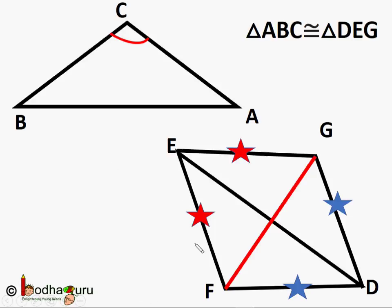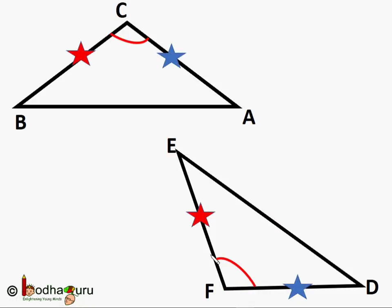In triangle EFG, angle EFG equal to angle EGF. And in isosceles triangle DGF, angle DFG equal to angle FGD. So we can see angle F equals angle G. But we know angle C equal to angle G, so angle F is equal to angle C. Now in triangle ABC and DEF: BC equal to EF, CA equal to FD, and angle C is equal to angle F, so they are congruent by the SAS rule.